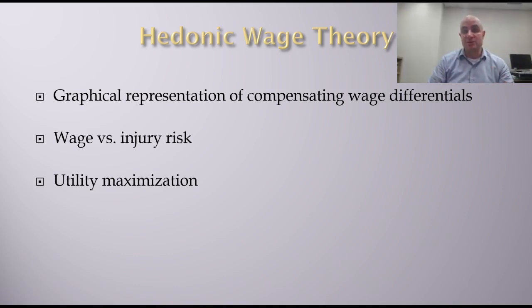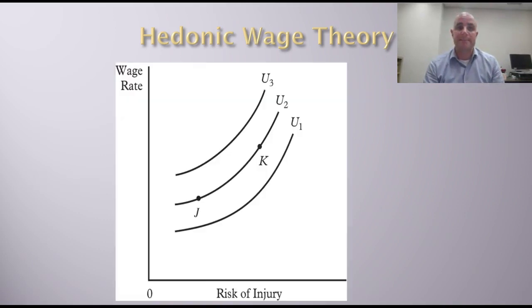The previous indifference curves we looked at were downward sloping, but what's going to happen here is they're actually going to be upward sloping. Here we have a graph that plots the wage rate and the risk of injury using hedonic wage theory.